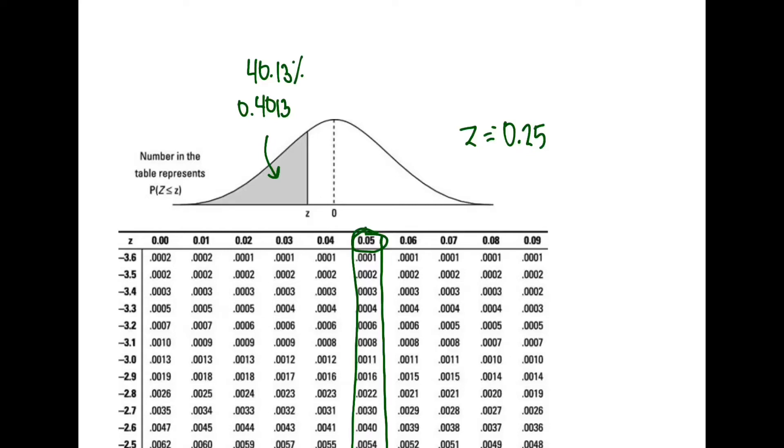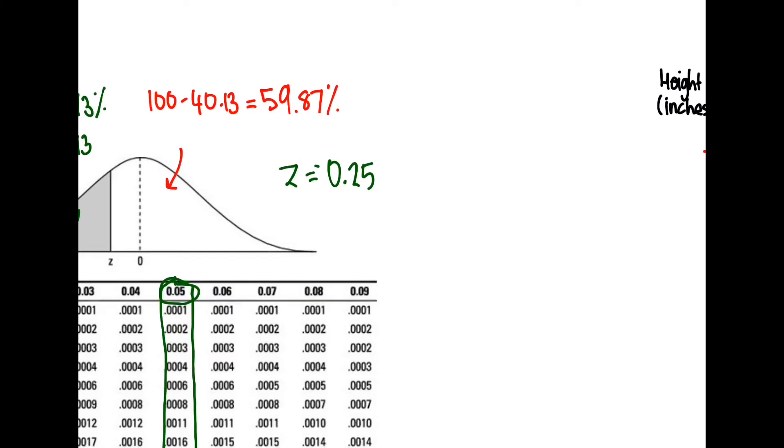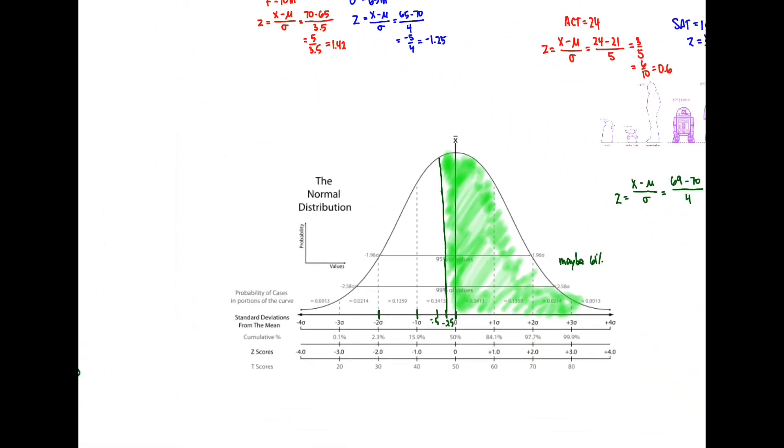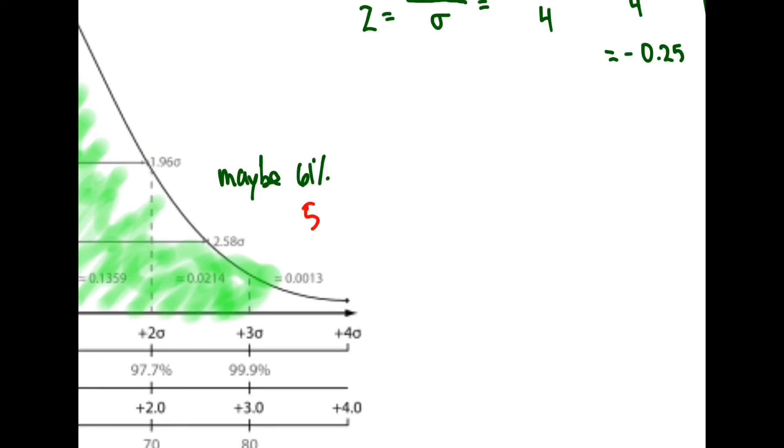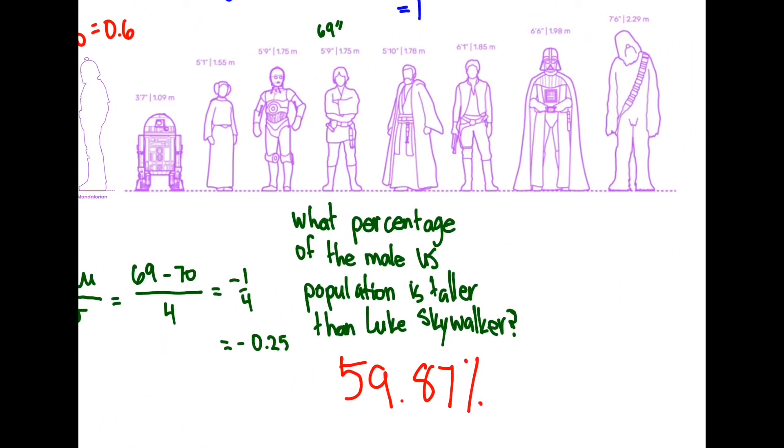So what does that mean? We want to know actually this area over here. And what is that? Well, it's going to be 100 minus that. So 100 minus 40.13 is going to equal 59.87%. So now using the Z table, we can say that 59.87% of US men are taller than Luke Skywalker, right? Is that what we got here? We guessed this. We're pretty close, right? 59.87% is the real answer. So almost 60% of the US male population is going to be taller than Luke Skywalker.